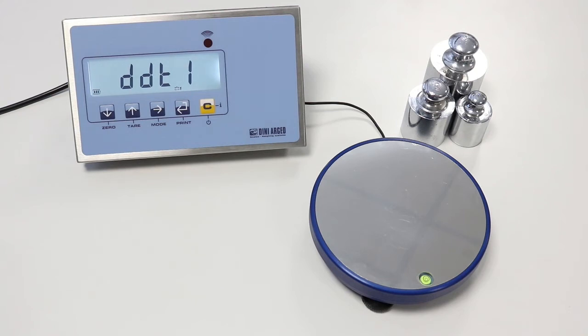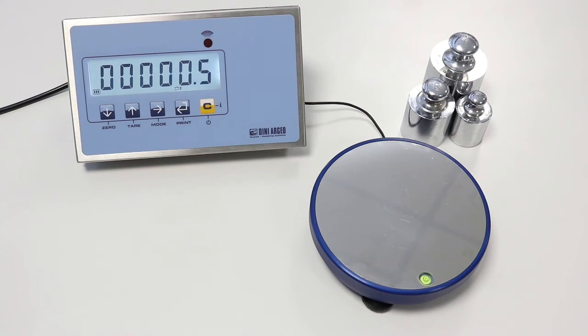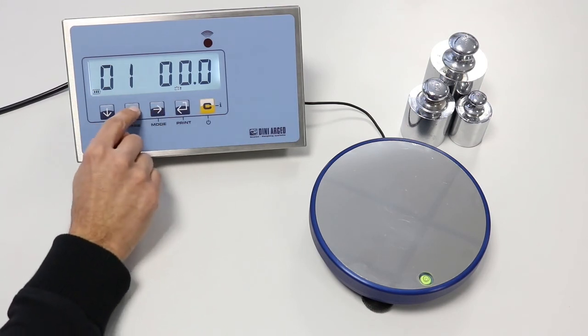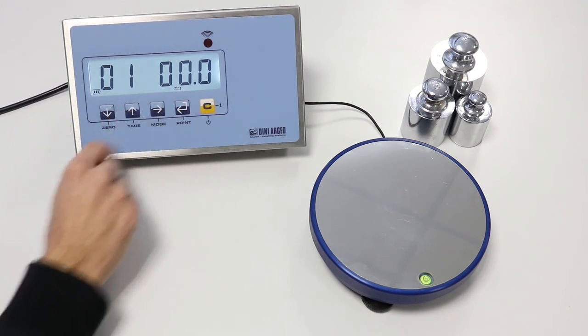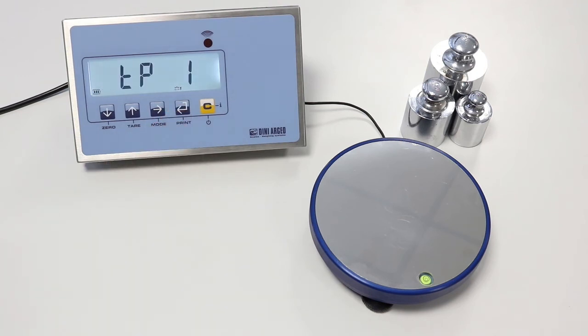DDT1 is the first calibration point. We set the weight value that we will use to calibrate. In our example, we use 1500 grams. We confirm with PRINT. TP1 appears. We load the sample weight on the scale. We confirm with PRINT and wait for the acquisition.